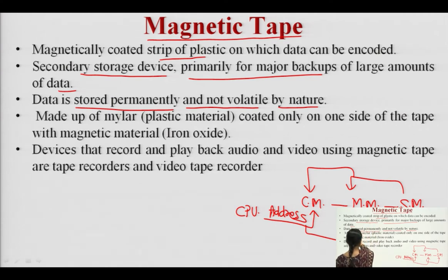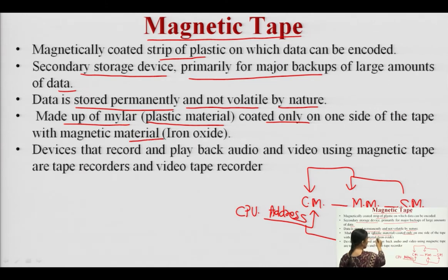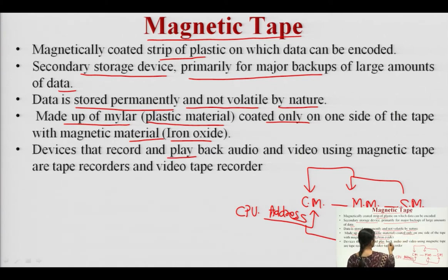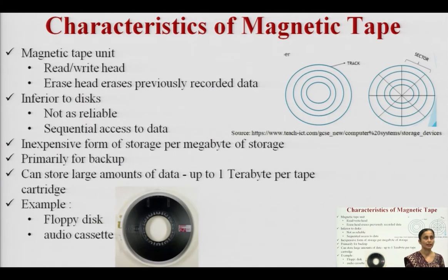Magnetic tape is made up of mylar, a plastic material coated on one side with magnetic material — iron oxide. Wherever the iron oxide coating is present, data is read or written in the form of zeros and ones. The devices that record and play back audio and video using magnetic tape are tape recorders or video tape recorders — these are examples of storing data on magnetic tape.